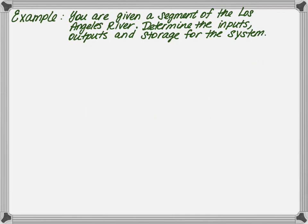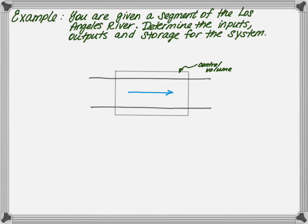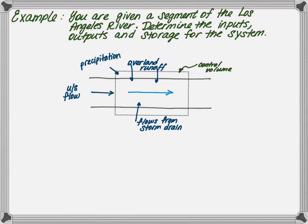Let's do an example to help explain the hydrologic budget further. You're given a segment of the Los Angeles River. Note the river is concrete and flows cannot infiltrate. Determine the inputs, outputs, and storage of your control volume. The first step is to draw a schematic of the problem statement. In this example, I have drawn a top view of the LA River and identified the control volume. Examples of inputs for our system include the upstream flow from the LA River, the overland runoff from the surrounding area, flows from storm drains directly connected to the river, and precipitation.